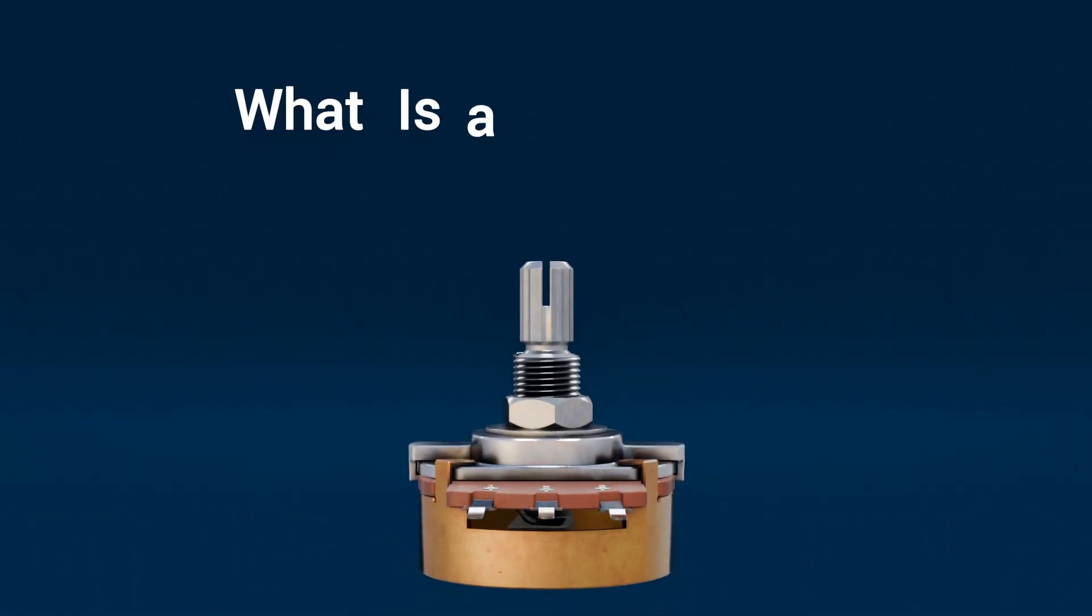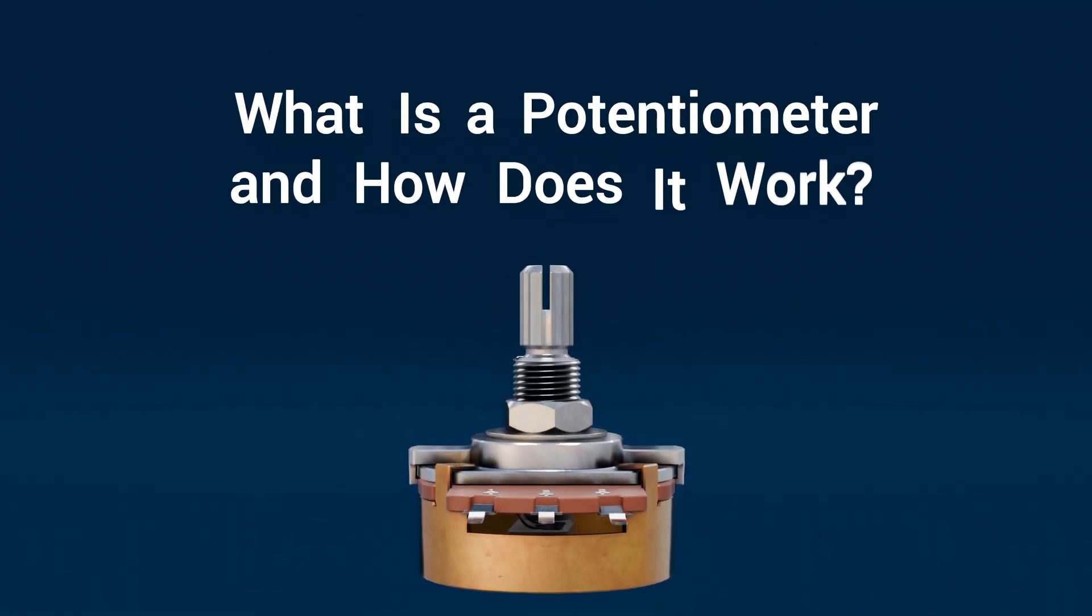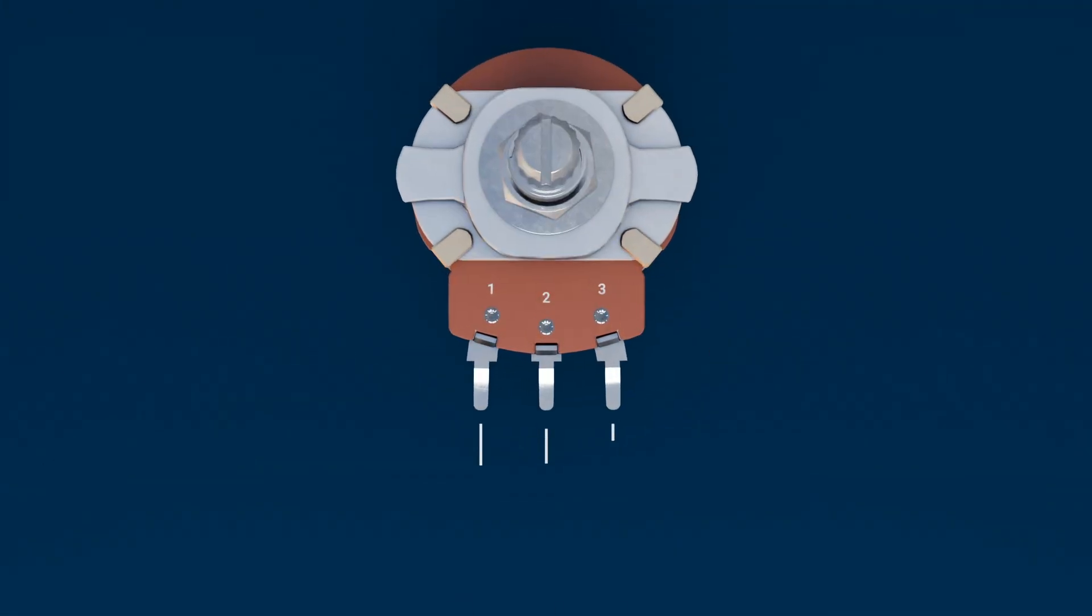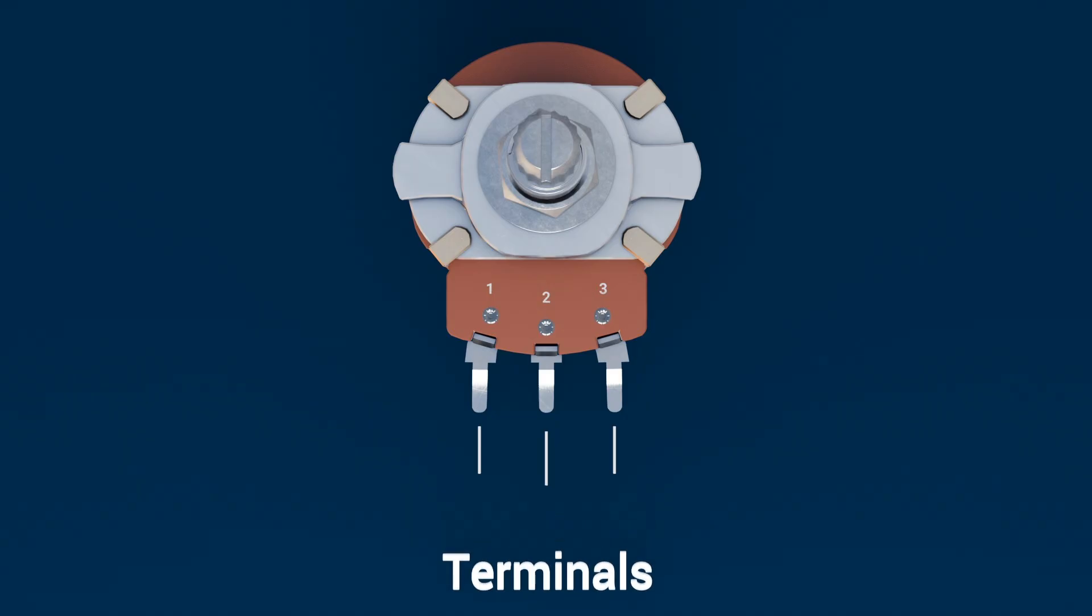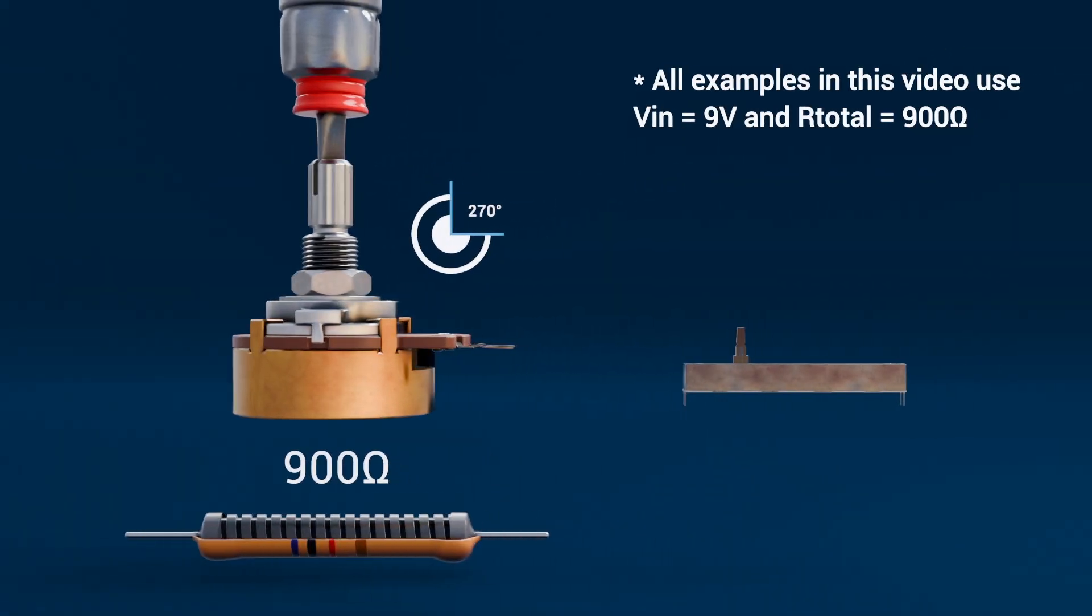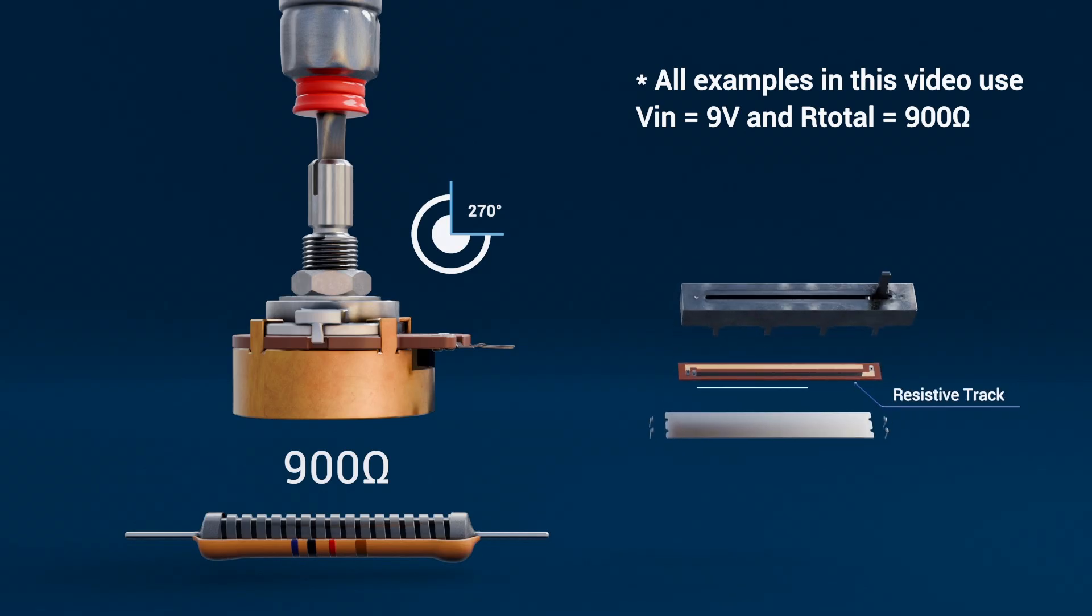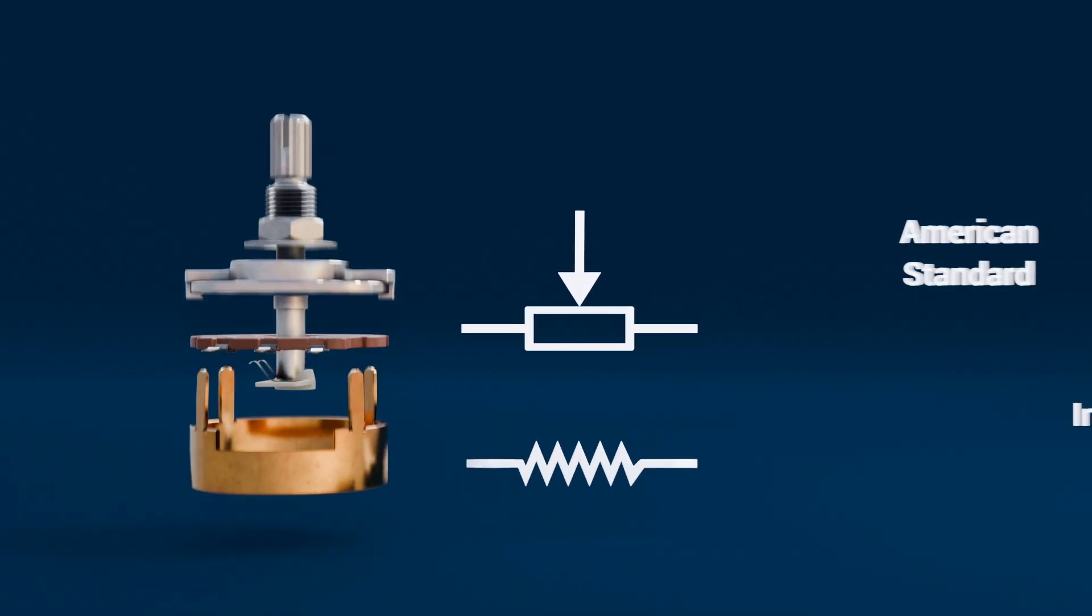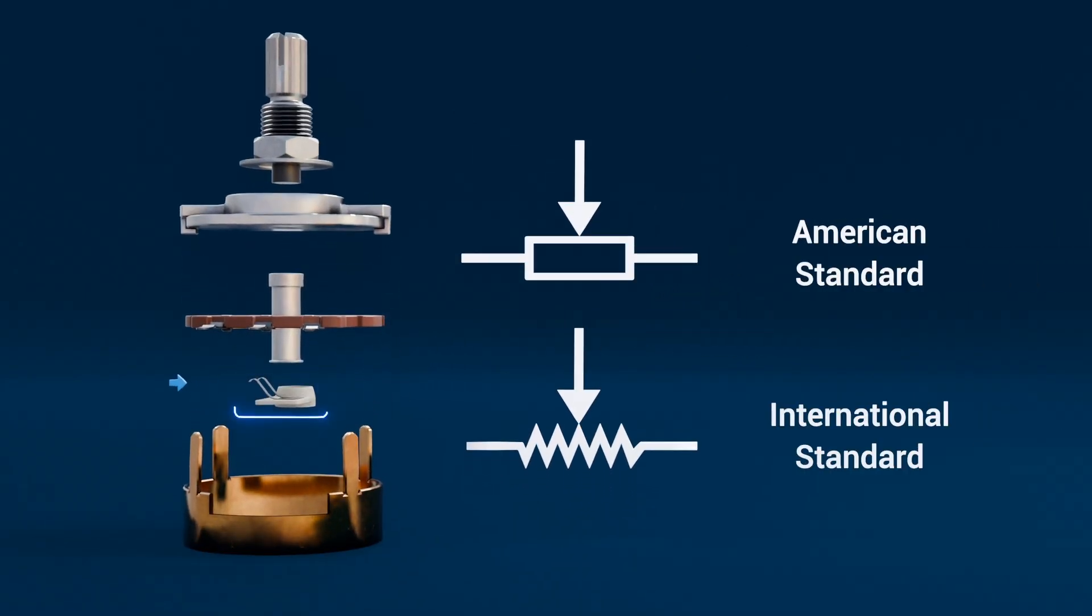What is a potentiometer and how does it work? A potentiometer is a variable or adjustable resistor, a three-terminal device that lets you manually adjust resistance in a circuit by rotating or sliding a contact across a resistive track. They are usually represented as a resistor symbol and an arrow touching it, representing the adjustable wiper.